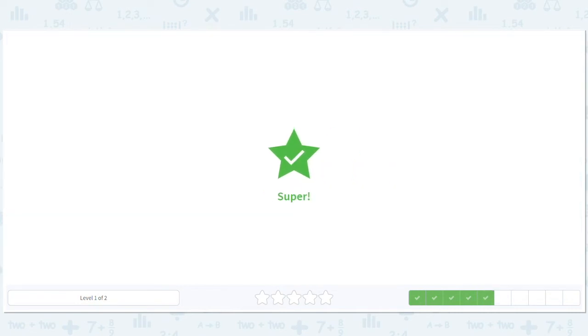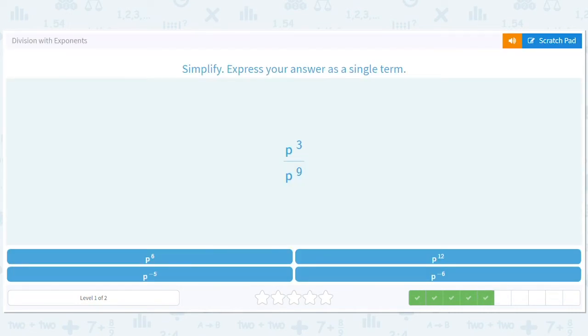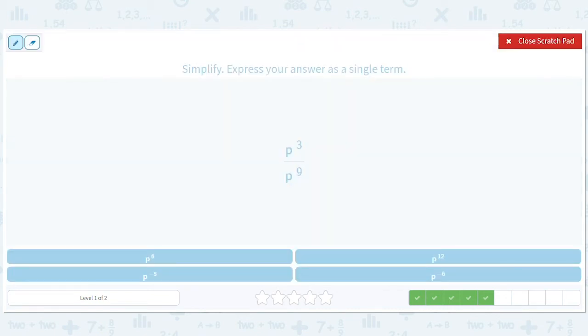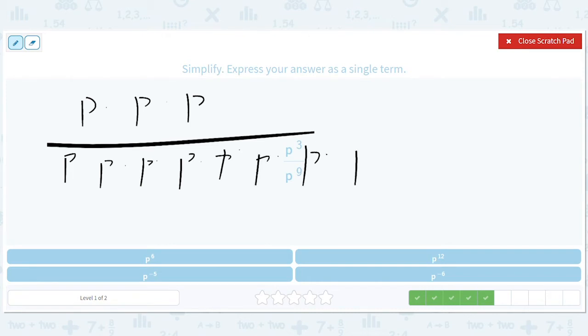Okay let me just take a second to explain why this is happening. If you have three p's on top and you have nine p's on bottom, three of them cancel out. You're left with a one on top and you're left with six p's on bottom. A negative means bottom and a positive means top.